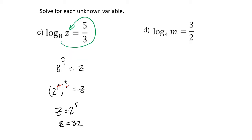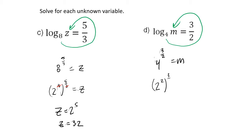Similar situation for this problem: the loop trick gives us 4 to the 3/2 power equals m. I need to figure out what 4 to the 3/2 is. Since 4 is also a power of 2, I can rewrite it as 2 squared, raised to the 3/2. Powers of powers: we multiply the exponents, so that's 2 cubed equals m. Therefore m equals 8.